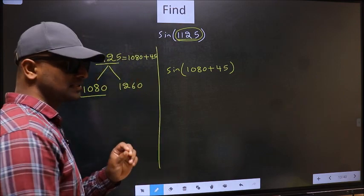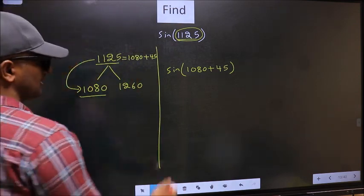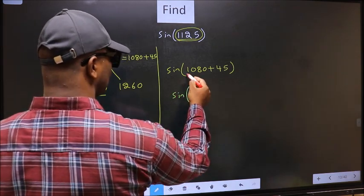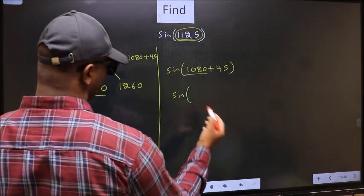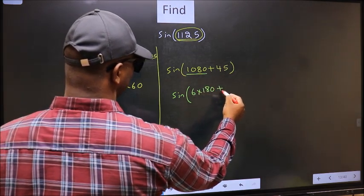This is step one. Next, in place of 1080, we should write 6×180 + 45.